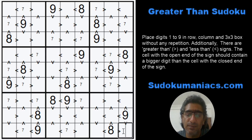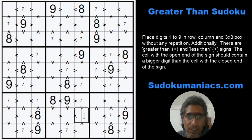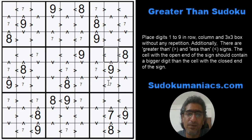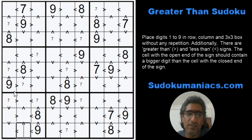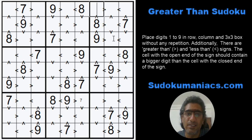This can be a 7, this can be a 7, this can be a 7. Not many breakthroughs yet, but looking at boxes 7 and 8, the 7s are locked in rows 7 and 9. So if I look at row 8, there's only one place where the 7 can be, which is here. We can safely start placing the other 7s: this is a 7, this is a 7, this is a 7, this is a 7, this is a 7, this is a 7, this is a 7 — we have found all the 7s.